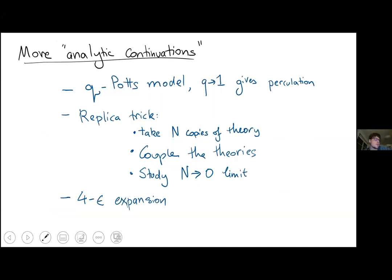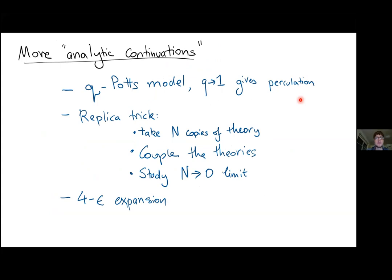Here are a few more examples of useful analytic continuations. The Q-Potts model can be used to study percolation in the Q→1 limit. The replica trick — used to study models with quenched disorder — involves taking N copies of a theory, coupling them, and then studying the N→0 limit. These all require letting N be small but non-zero, so we need to make sense of such limits.